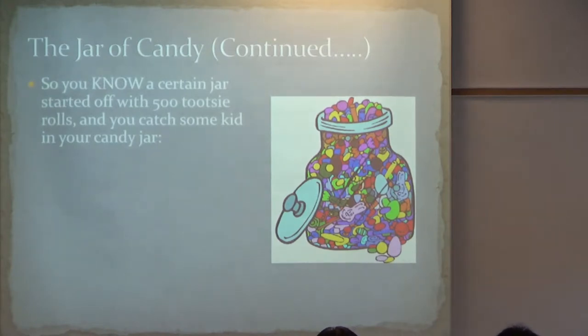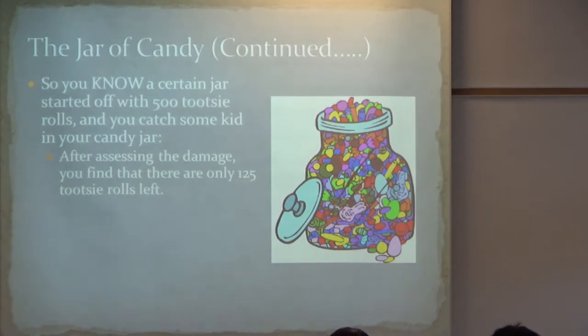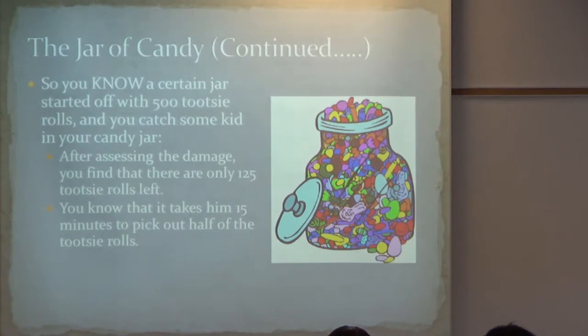So you know that a certain jar starts off with 500 Tootsie Rolls. And you're coming home, and you're looking forward to some Tootsie Rolls, and you find some kid rooting around in your candy jar. And you want to know, how long has that kid been rooting around in my candy jar? After assessing the damage, you find out that there are only 125 Tootsie Rolls left in your jar. And you know it takes the kid 15 minutes to pick out half of the Tootsie Rolls. So, based on this and working backwards, how long do you think this kid was rooting around in your candy jar? 30 minutes. It takes him 15 minutes to pick out the first 250. It takes him another 15 minutes to pick out another 125. You're left with 125. 30 minutes.